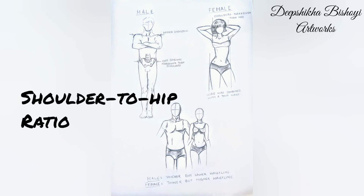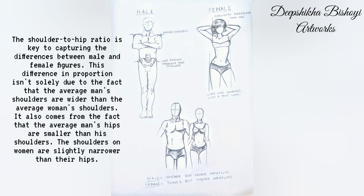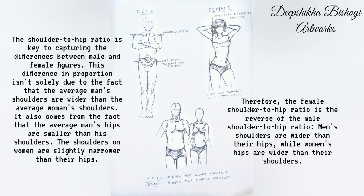Last but not least, the shoulder to hip ratio is key to capturing the differences between male and female figures. This difference isn't solely due to the fact that the average man's shoulders are wider than the average woman's. It also comes from the fact that the average man's hips are smaller than his shoulders, while the shoulders on women are slightly narrower than their hips. Therefore, the female shoulder to hip ratio is the reverse of the male: men's shoulders are wider than their hips, while women's hips are wider than their shoulders.